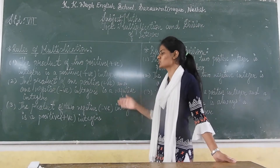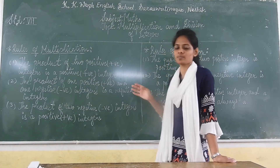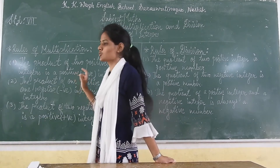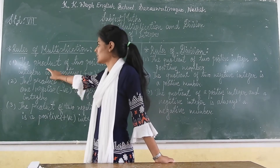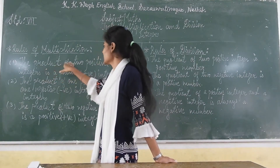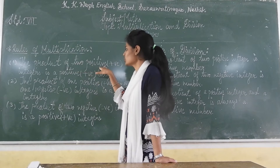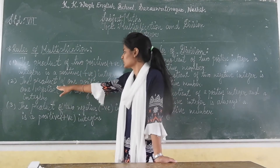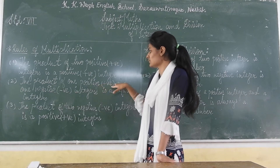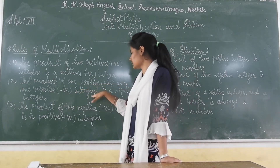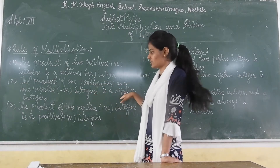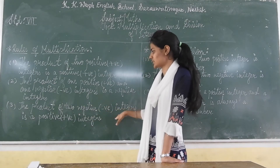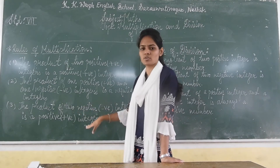Here are some rules of integers and multiplication. The first rule of multiplication of integers is: the product of two positive integers is a positive number. The product of one positive and one negative integer is a negative integer. The product of two negative integers is a positive integer.